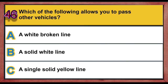Question 46. Which of the following allows you to pass other vehicles? A. A white broken line. B. A solid white line. C. A single solid yellow line. Correct answer is A: A white broken line.